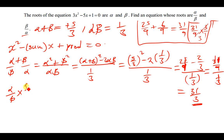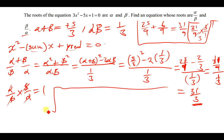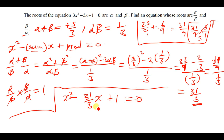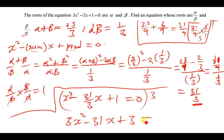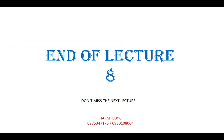The product of the new roots is (alpha/beta) times (beta/alpha) equals 1, since alpha and beta cancel. Substituting into the equation: x squared minus (31/3)x plus 1 equals 0. Multiplying everything by 3 gives 3x squared minus 31x plus 3 equals 0. This is the equation they wanted. Thank you very much for watching today's lecture — see you in the next lecture.